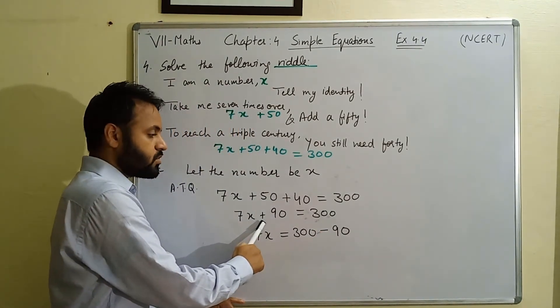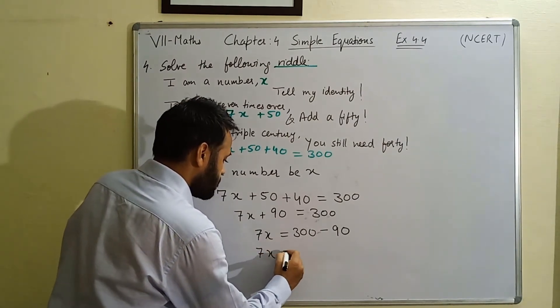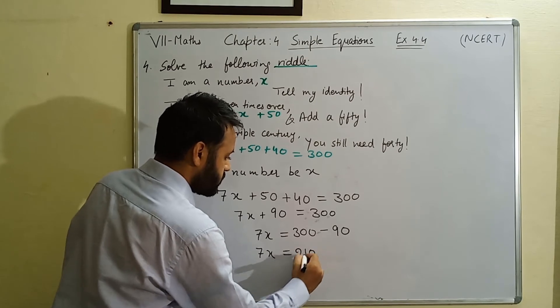It will be subtracted here because yeha pe ye plus tha or right hand side jaake ye minus ho jaega. So what we get - 7x is equal to 210 here.